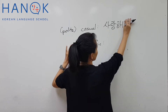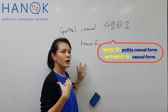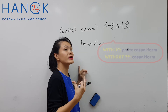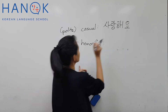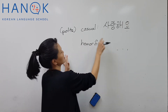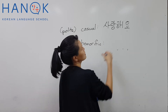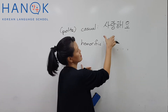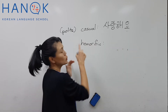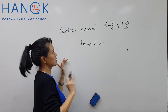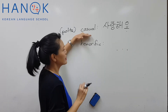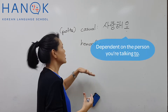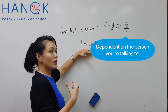Without a 요 it's 사랑해. You use 사랑해 — just casual — if you're talking to somebody younger than you, your junior, or somebody very close to you. But if you're talking to somebody you need to be polite to, you use 사랑해요, because you're not too close to that person. No 요, no polite. This is depending on the person you're talking to. Honorific is about the person you're talking about.